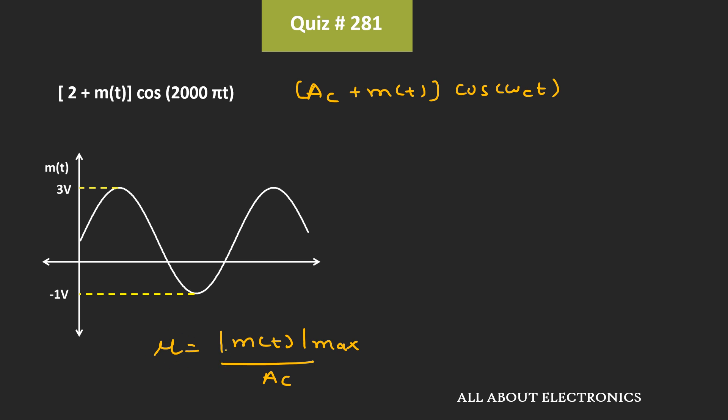So first of all, let's see how the modulated signal will look like. So here, this AC is equal to 2. And this message signal is varying between 3 and -1V. That means if we see the modulated signal, then it will look like this.